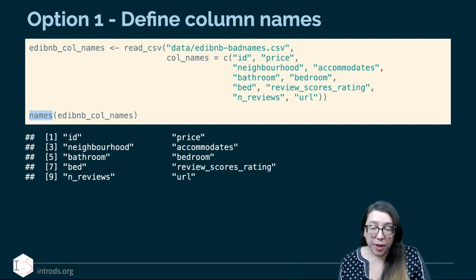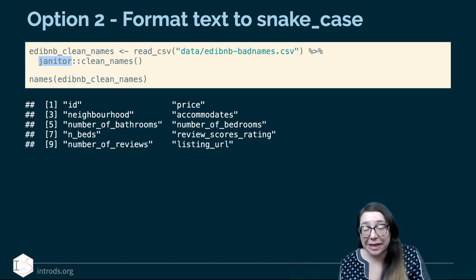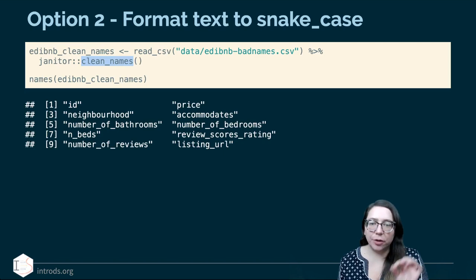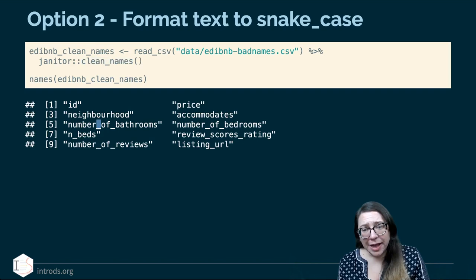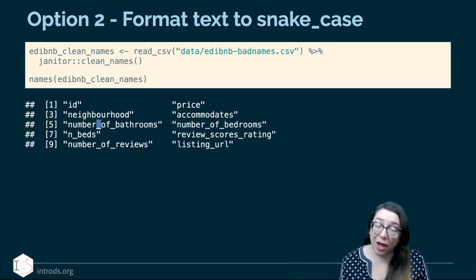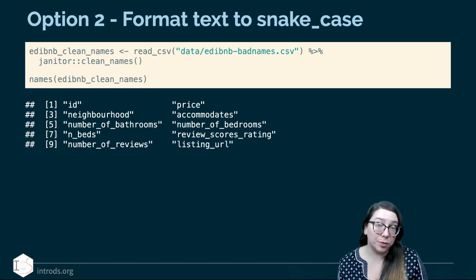Another option is using a package called janitor — not a tidyverse package, but tidyverse-friendly and works nicely within a pipeline. It has a function called clean_names that takes variable names and using some heuristics turns them into snake_case. It won't simplify long names for you, but it will make everything lowercase and replace spaces with underscores. It gives you less customization than the previous option, but if you have lots of variables to work with, you may not want to write out names for each one. This gives you something quicker to work with, and now variable names have no spaces, making them much easier to use downstream in your analysis.